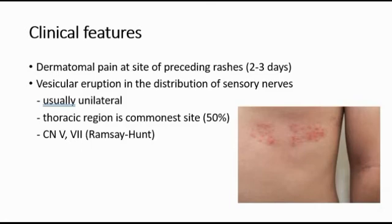The commonest site is at the thoracic region, and it is often associated with cranial nerve 5 and cranial nerve 7, which is also seen in Ramsay-Hunt syndrome.